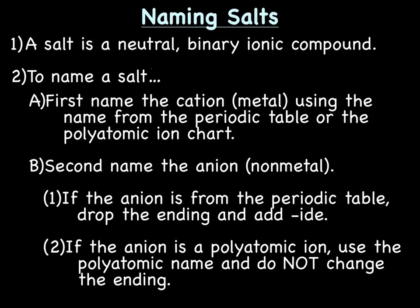Let's start with a quick review on naming salts. This is a review because a salt is nothing other than a neutral — meaning pH of 7 — binary ionic compound, and you know how to name ionic compounds. To name a salt, the first name is always the cation, the positive one, or the metal. You're going to use the name directly from the periodic table or the polyatomic ion chart, so no changes.